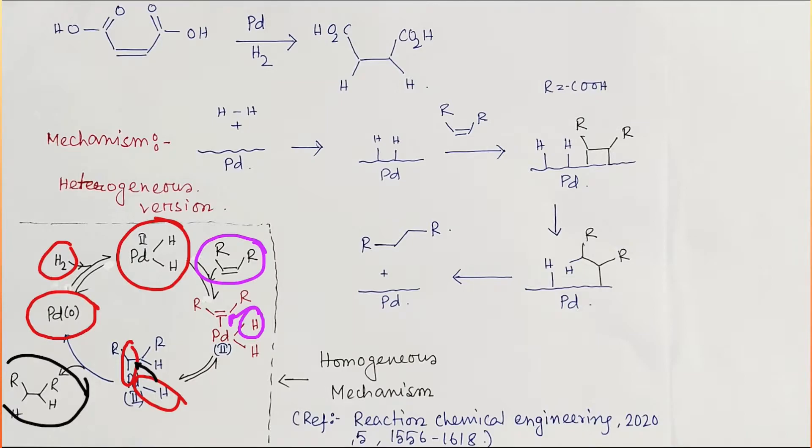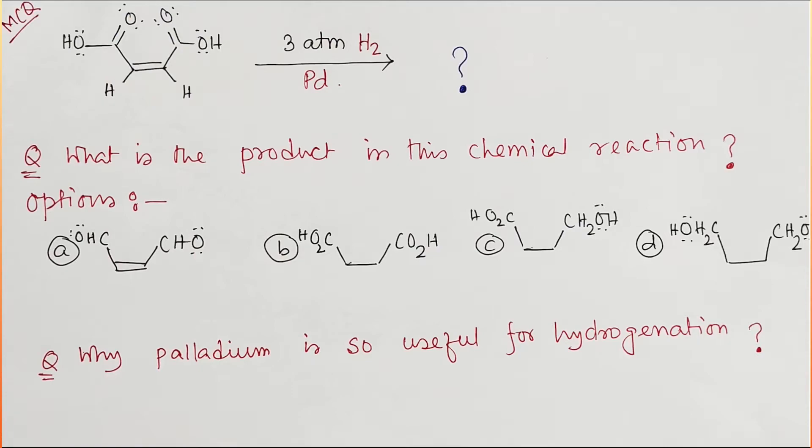This is a very brief explanation about the mechanism. We understand the product. Now we understand what is the product: only this one. This diacid will remain unreacted. Only the C=C double bond will be reduced.